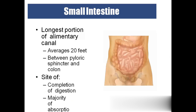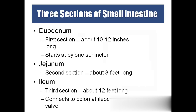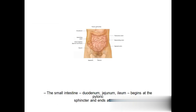The small intestine is the longest portion of the digestive tract at about 20 feet. It starts from the pyloric sphincter and ends at the colon. All digestion is completed and most absorption occurs in the small intestine. Its three parts are: duodenum (10–12 inches, starting from the pyloric sphincter), jejunum (about 8 feet long), and ileum (12 feet long), which connects to the colon via the ileocecal valve.